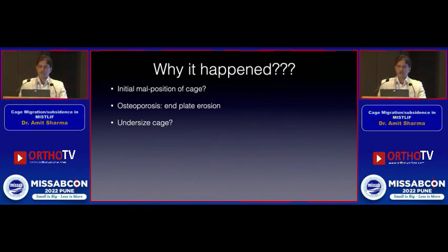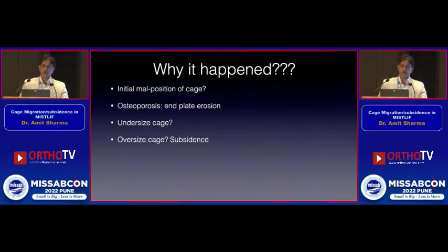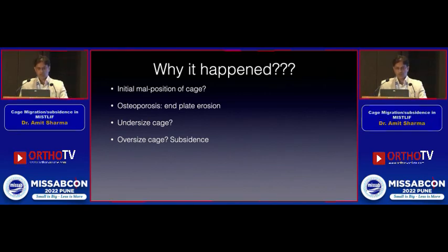Osteoporosis also contributed. The cage was actually the correct size in this case, but if you put an undersized cage, chances of backing out increase. If you put an oversized cage, you risk breaking the endplates, and the cage won't be held in position properly, leading to subsidence — which is another kind of problem.